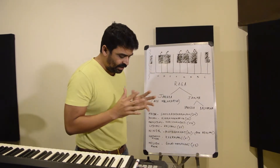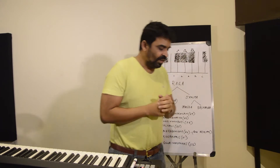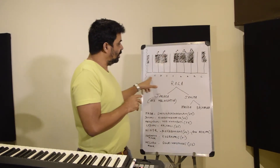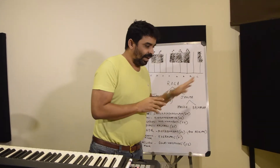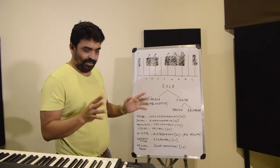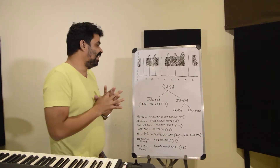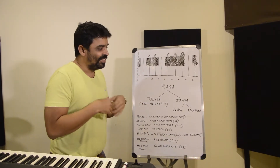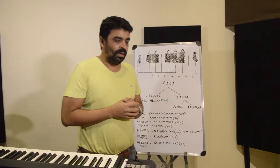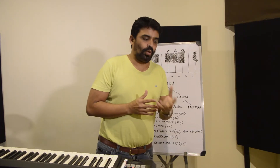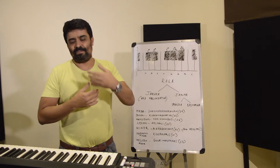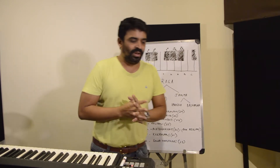One common thing between western music and Carnatic music is the octave — the octave is the same in both, which is good news. And then the way the octave is divided into 12 notes is also pretty much the same, though this is a point of contention among academicians.